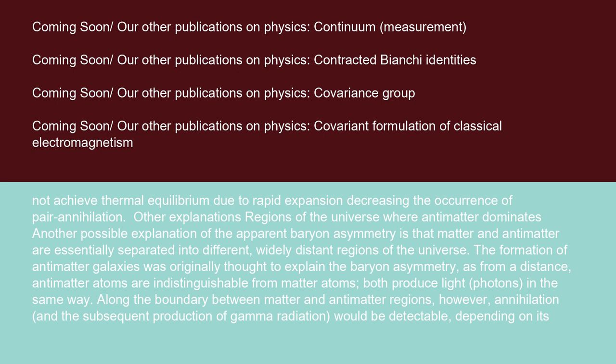Other explanations: regions of the universe where antimatter dominates. Another possible explanation of the apparent baryon asymmetry is that matter and antimatter are essentially separated into different, widely distant regions of the universe. The formation of antimatter galaxies was originally thought to explain the baryon asymmetry. As from a distance, antimatter atoms are indistinguishable from matter atoms. Both produce light, photons, in the same way.